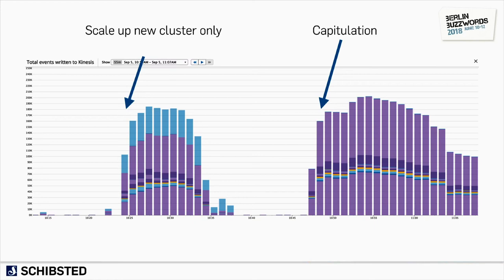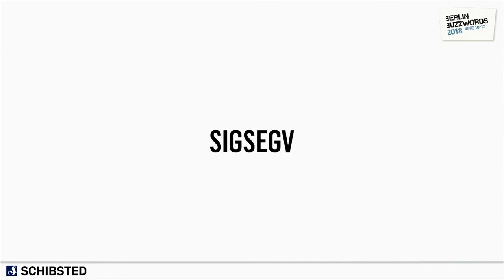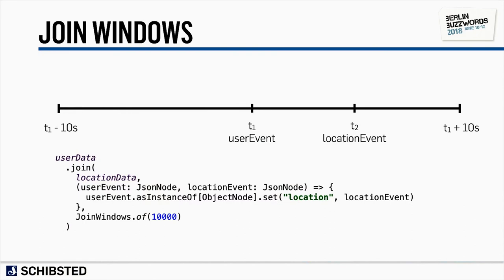We also discovered an interesting fault — a segmentation fault. The problem was with the join window: even though we specified a 10-second join window, the join still has a default retention time of 24 hours. That means for roughly 800 million events, it has to keep all of them in the join. The fix was to specify a much shorter retention time — we set it to 30 seconds — so whatever's in the join after 30 seconds is discarded, which is fine for our use case.